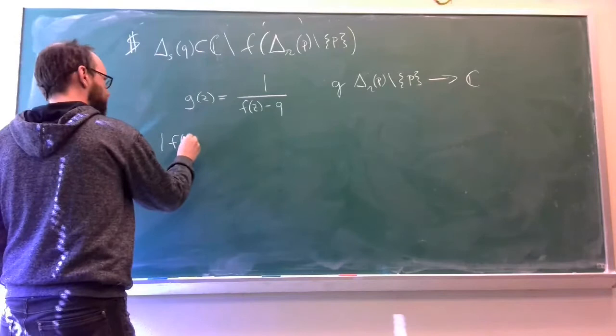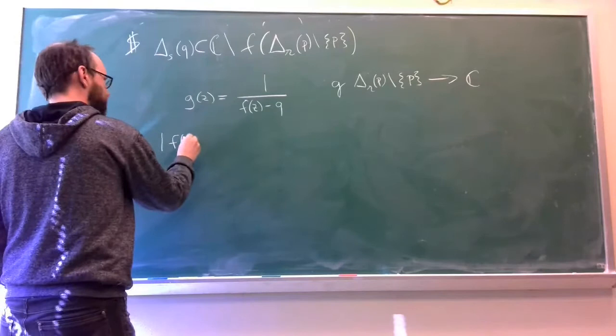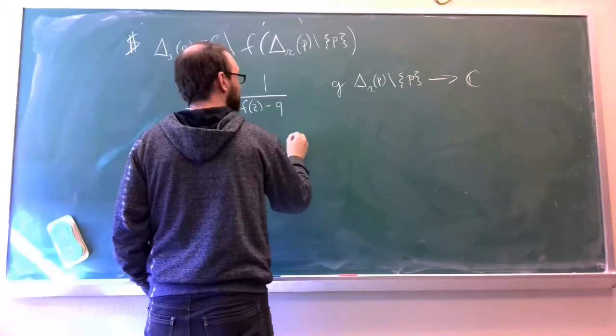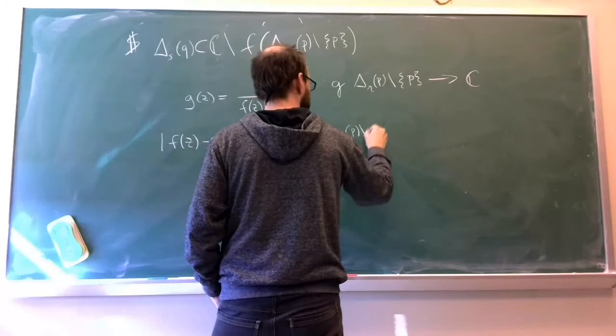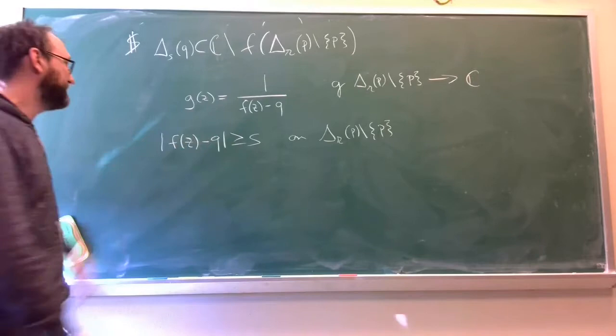Because |f(z) - q| is definitely bigger than or equal to ε on this punctured disk. So it's definitely defined there. It's a nice holomorphic function. Everything's great.